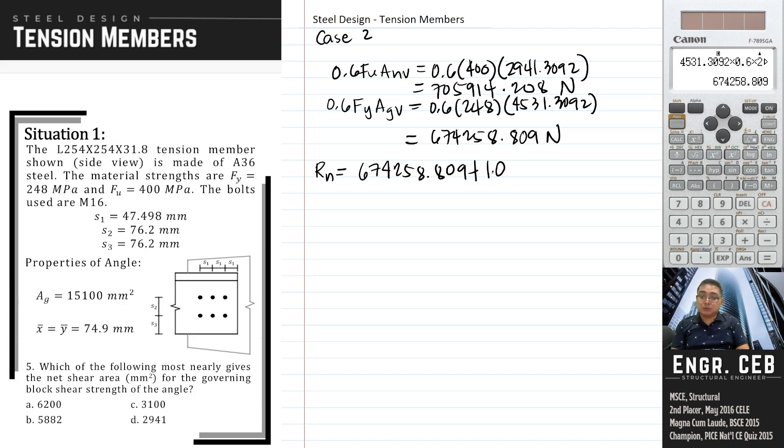By the way, the U sub BS is the block shear coefficient. Since we are assuming that the load is concentric, it results in uniform stress on the tension member. For uniform stress in tension members, the value of U sub BS is 1.0.